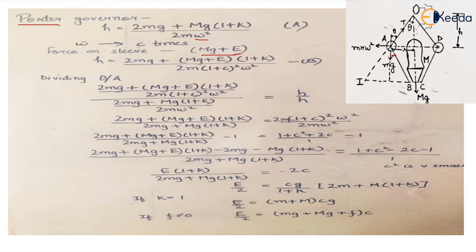E is the force which is being applied whenever we are trying to change the position of the sleeve. The new formula becomes: (2mg + (Mg + E)·(1 + k)) / (2m·(1 + c)²·ω²). The speed changes by c percentage — for example, if the question states omega changes by 6%, then (1 + c) = (1 + 0.06), so c = 0.06, denoting the fractional change in the original angular speed.